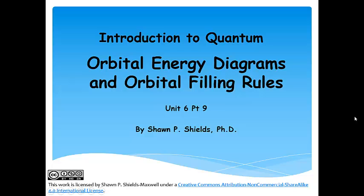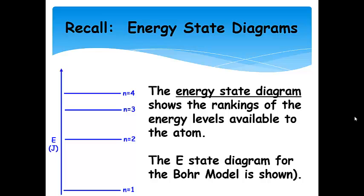Orbital energy diagrams and orbital filling rules. Let's remind ourselves of energy state diagrams. We saw these back when we talked about the Bohr model of the atom. The energy state diagram shows rankings of the energy levels from lowest to highest, labeled with principal quantum number n, which indicates the energy level. In the Bohr model, there was just one energy state for each n.